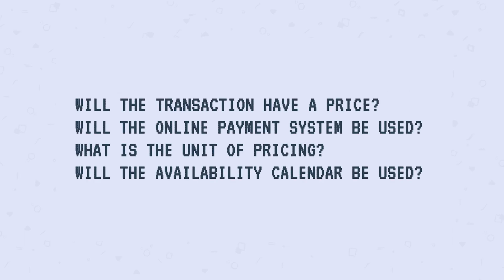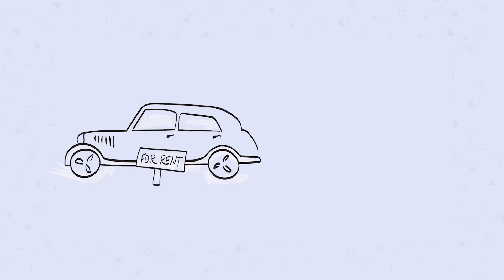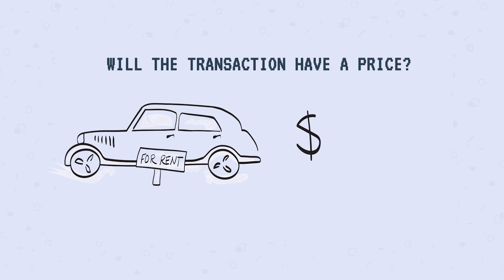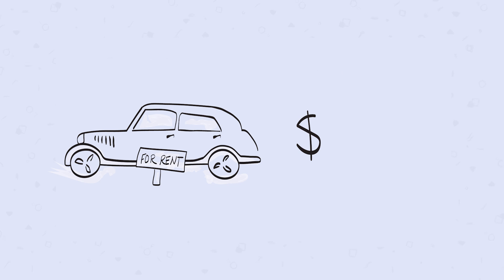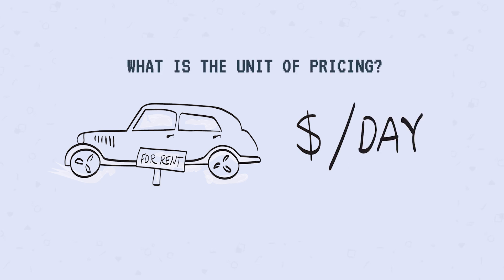When you've answered these questions, you're more than halfway to creating your order type already. Your answers tell you which settings to configure, and they in turn define what information providers have to fill when they post a listing. So let's exemplify this with a peer-to-peer car rental marketplace. The answers to the questions could be as follows: yes, the transactions will have a price. Providers can put up their car for rent when they don't need it themselves and make some extra money. The pricing unit will be per day — your customers can rent a car for a day trip or a longer journey.